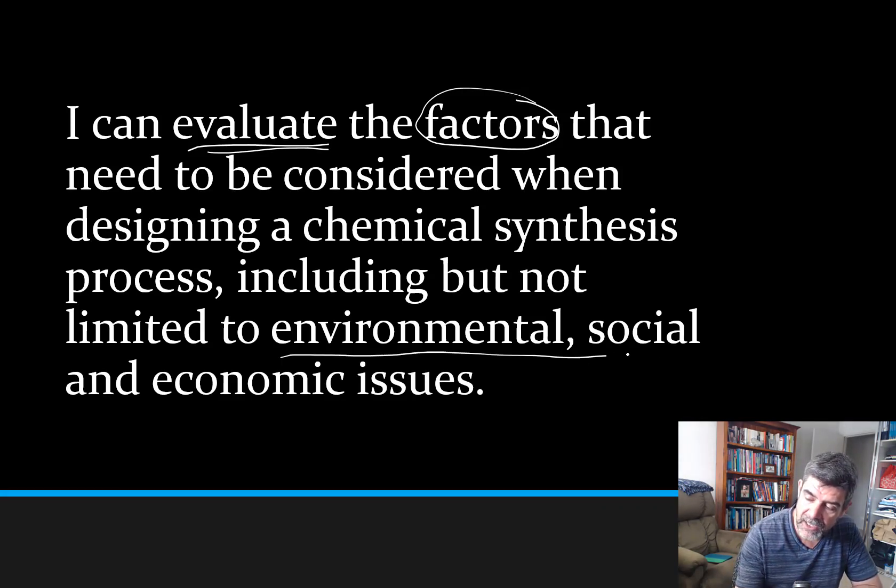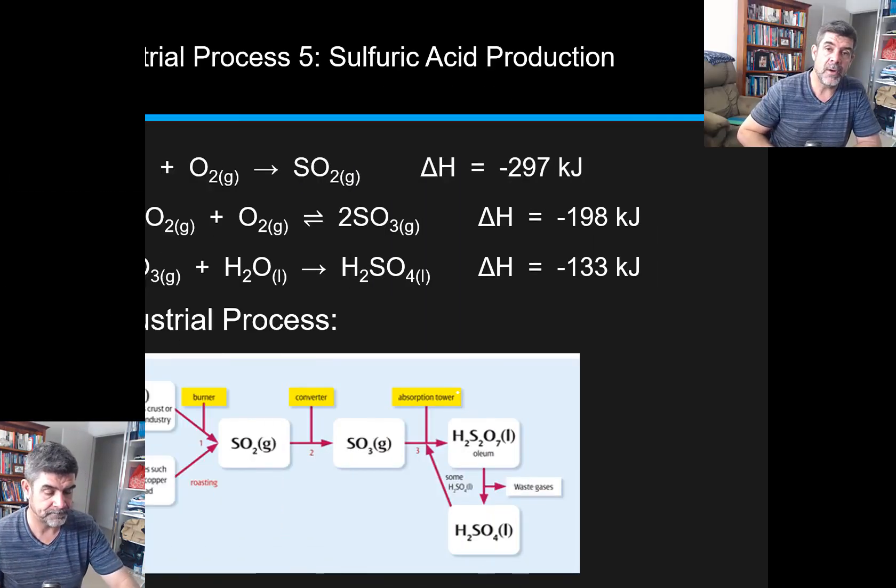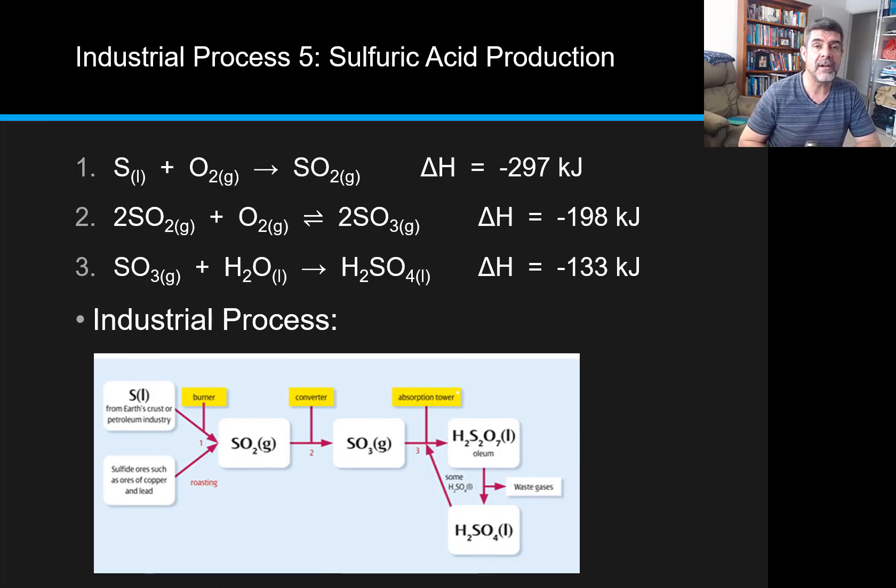In our last one we look at some of these broader issues around environmental, social, and economic issues. And in order to do that I thought we'd set this last one in the context of sulfuric acid production. So our final case study is around the production of sulfuric acid. Now sulfuric acid is a really important substance. It's one of those substances that we've used a number of times as a catalyst, as it is a really good dehydrating agent.